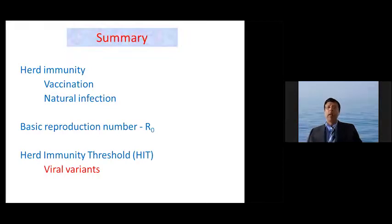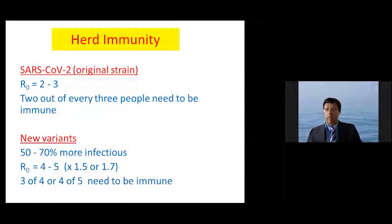So finally, I'll talk about herd immunity threshold and viral variants. We know that with SARS-CoV-2, the original strain R0 is about 2 to 3. So two out of every three persons would need to be immune to reach herd immunity. While with new variants, when there are about 50 to 70% more infectious or more transmissible, the R0 increases. That is why countries are rushing in to vaccinate people to prevent these new variants becoming established.